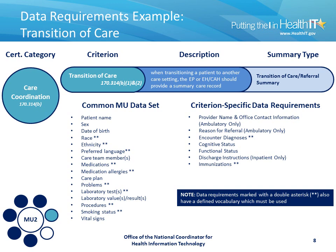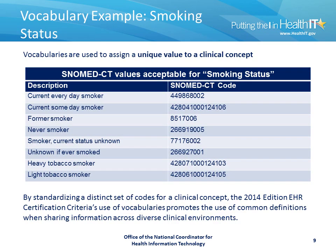In many cases, the data requirements additionally have vocabulary requirements stipulated that need to be met when communicating the specified data requirement identified. The goal of identifying a vocabulary requirement is to identify a unique value for each clinical concept. On this slide, you'll see a smoking status vocabulary requirement that's required by the certification criterion. The goal here is that by standardizing a distinct set of codes for a clinical concept, the Meaningful Use Program's use of vocabularies promotes the use of common definitions when sharing definitions across diverse clinical environments.